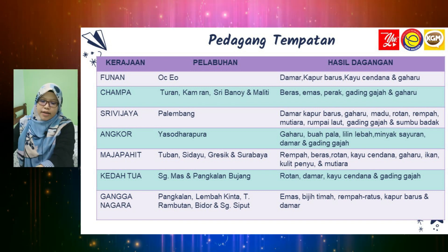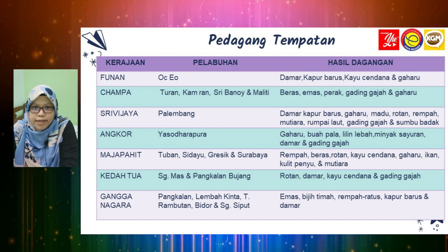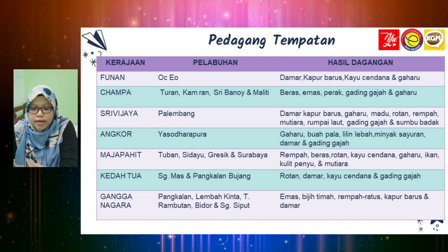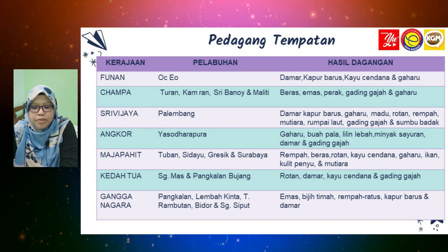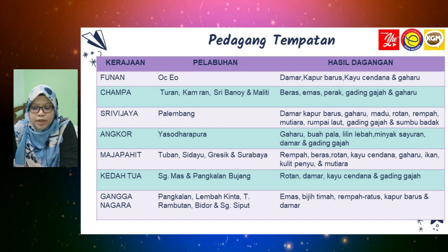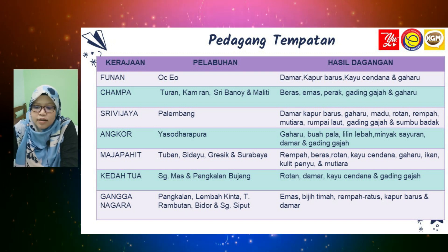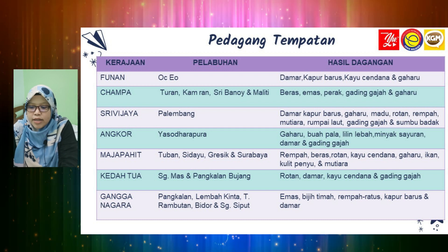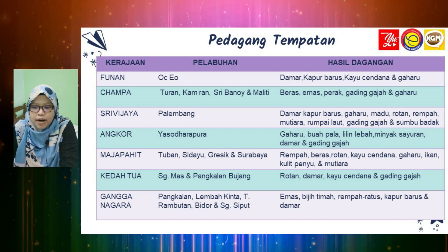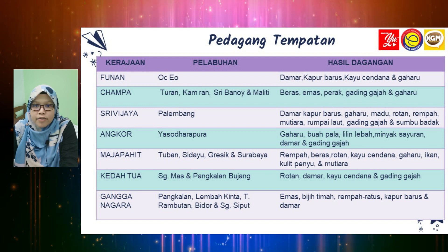Dan yang terakhir adalah Gangga Negara, di mana pelabuhannya terletak di Pangkalan, Lembah Kinta, Tanjung Rambutan, Bidur dan Sungai Siput. Barang yang didagangkan adalah emas, biji timah, rempah ratus, kapur barus dan damar.